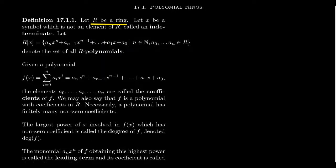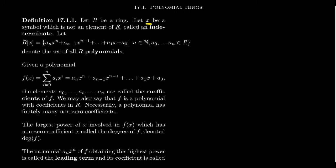We are going to assume our ring is commutative. Very little of the theory we develop about polynomial rings actually requires the coefficient ring to be commutative, but for the most part you can assume that R is a commutative ring unless stated otherwise. So you have this ring R.